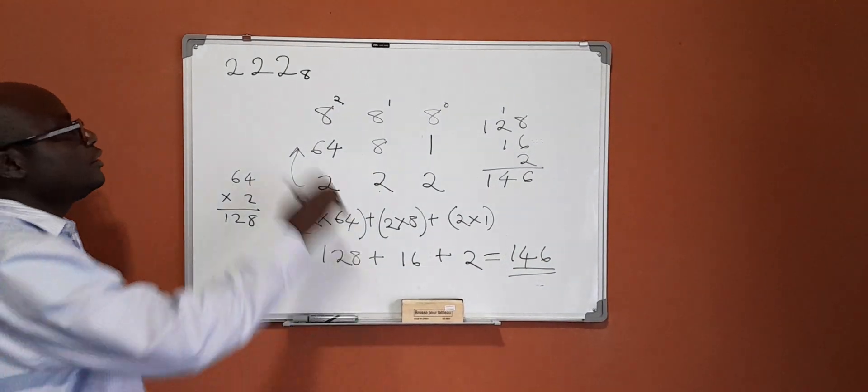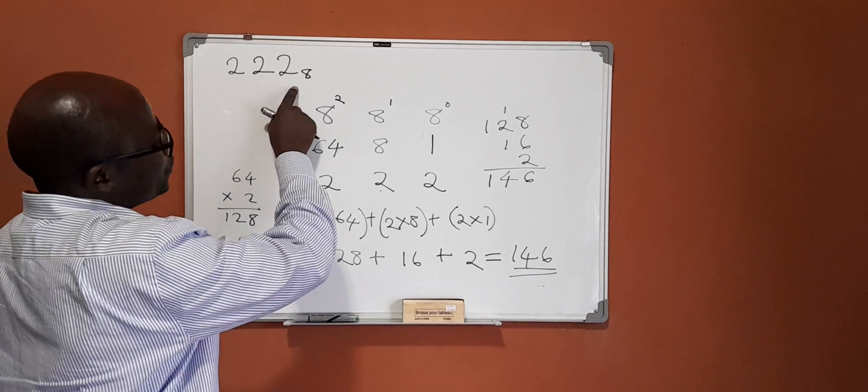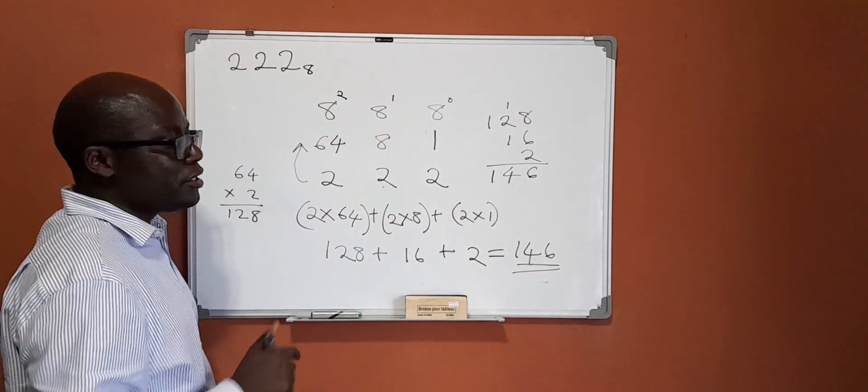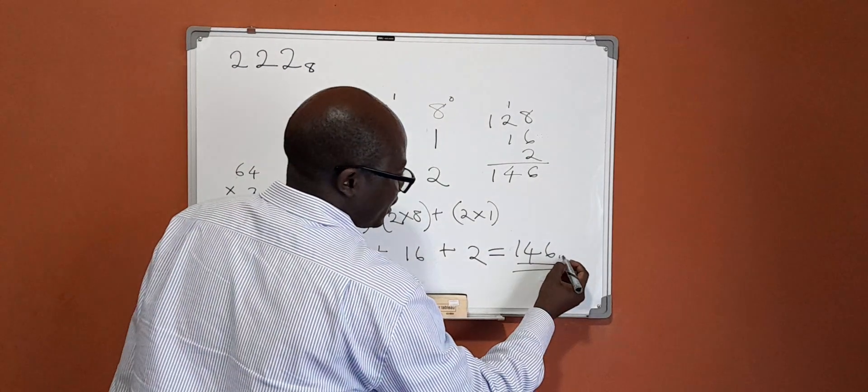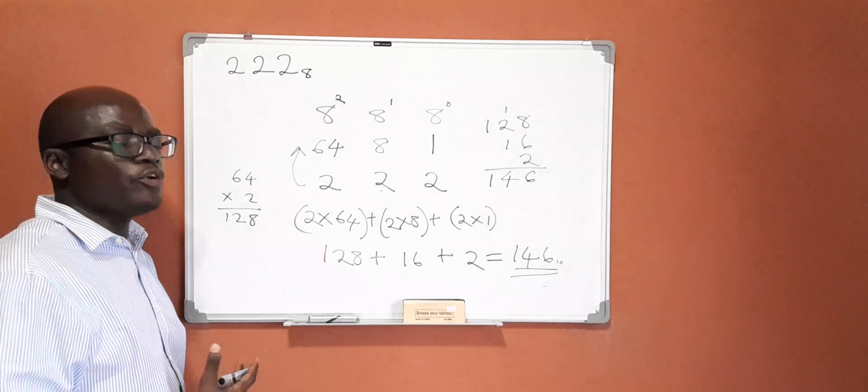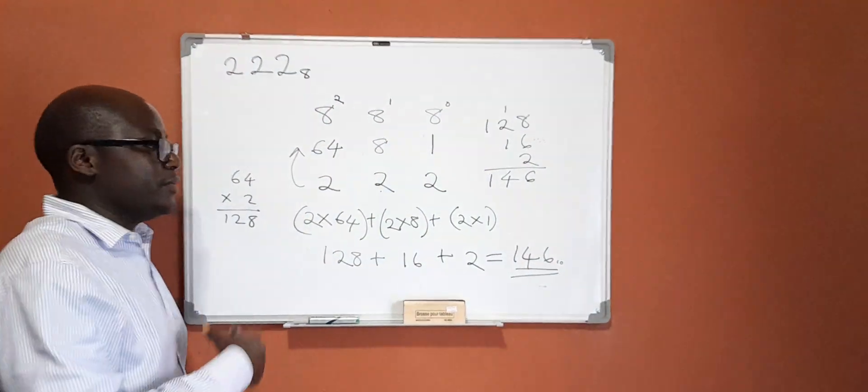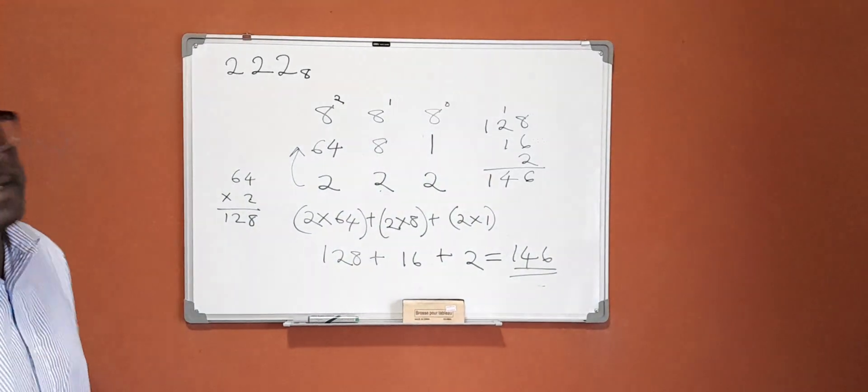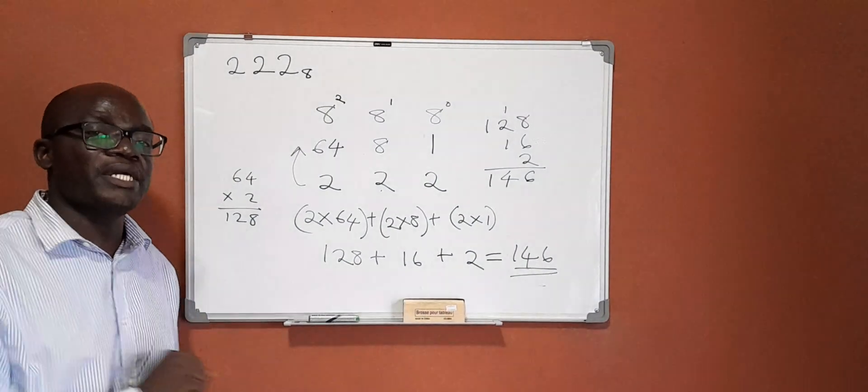What this means is that 222 in base 8 when written in base 10 is 146. We would have indicated 10 here, but since numbers in base 10 are what we normally use every day, there's no need to indicate that. Everyone will know when you don't indicate anything that that number is in base 10.